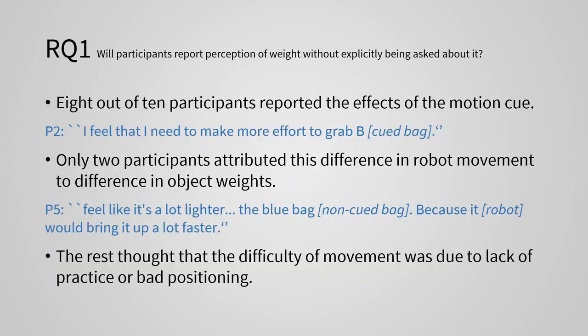We found that 8 out of 10 participants reported the effects of the motion cue, for example, that they needed to make more effort to grab the cued bell. But only two participants attributed this difference in robot movement to difference in object weights. The rest thought that the difficulty of movement was due to lack of practice or bad positioning.